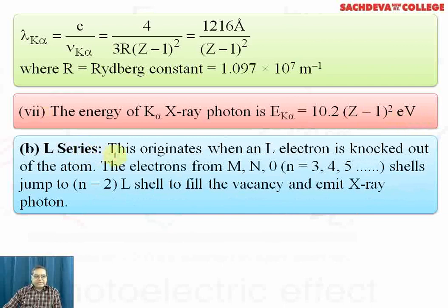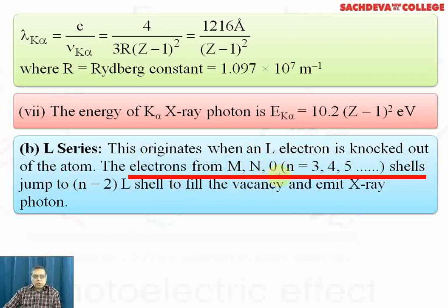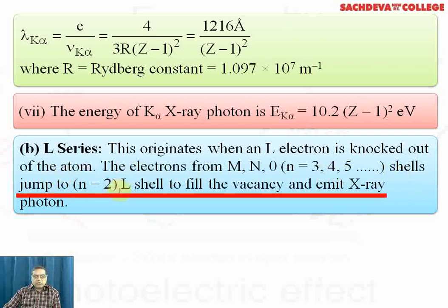L series means n=2 series. This originates when an L electron is knocked out of an atom. The electrons from M, N, O shells with quantum numbers 3, 4, 5, jump to n=2 L shell to fill the vacancy and emit X-ray photons.